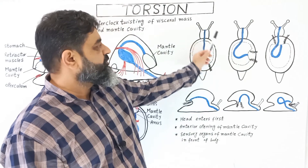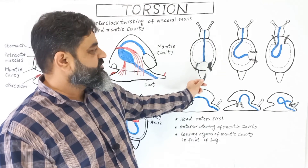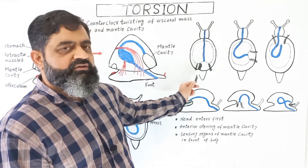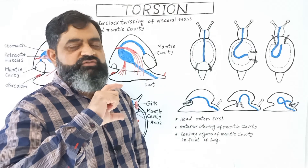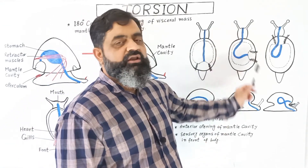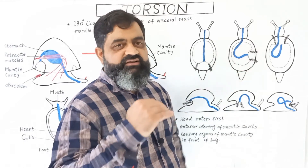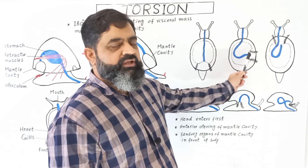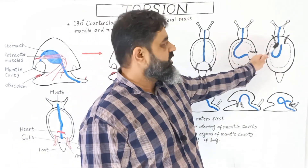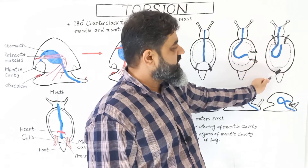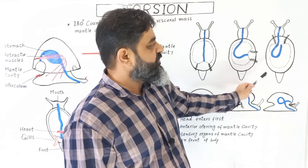Let's discuss torsion in one more view to understand the whole concept. Here is another diagram of the snail body showing the anterior surface, posterior surface, mantle cavity on the posterior side, and gills on the posterior side. The digestive system is tube-like running from the anterior to the posterior side. The retractor muscles twist the visceral mass to an angle of 90 degrees. Now the mantle cavity and gills have moved to the lateral side of the body at a 90-degree angle. Later, the retractor muscles rearrange and pull the whole structure to the anterior surface of the body. The digestive system becomes U-shaped, the mantle cavity transfers to the anterior surface along with the gills, and the heart, which was on the posterior side, has also moved to the anterior surface.